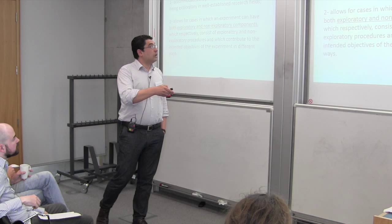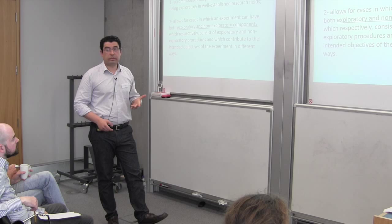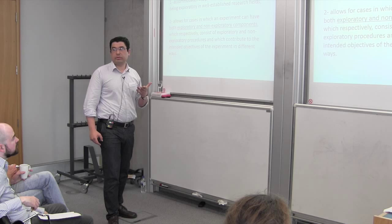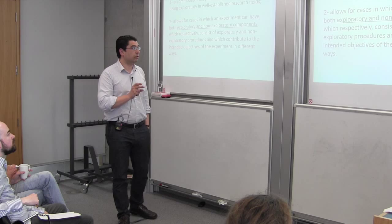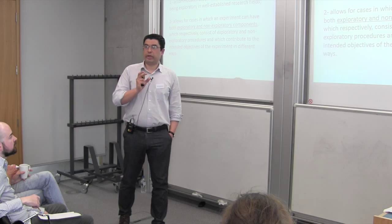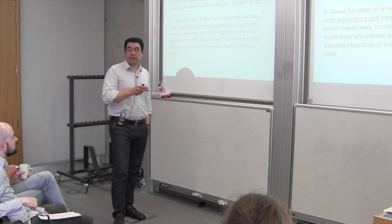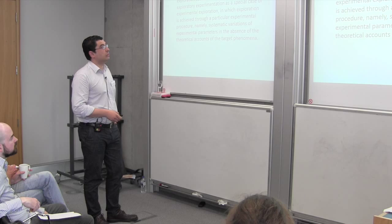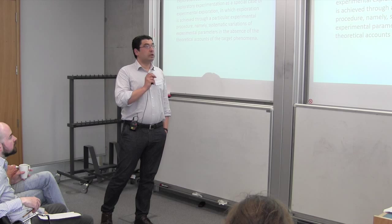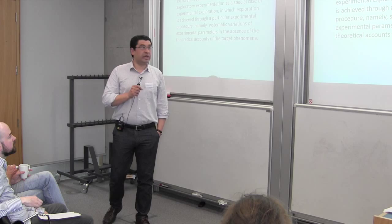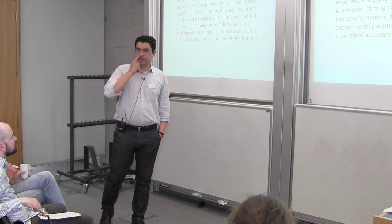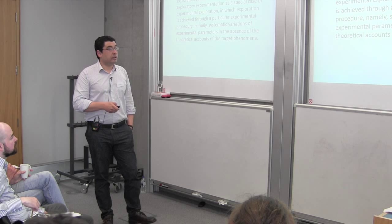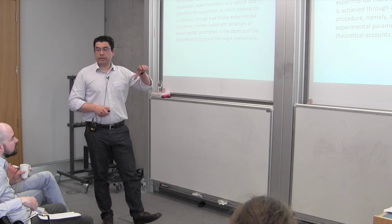Contrary to Steinle's account, my account first accommodates the possibility of experimentation being exploratory in well-established research fields. Second, it allows for cases where an experiment can have both exploratory and non-exploratory components, which might consist of different procedures that contribute to the overall aim in different ways — they can complement each other. The notion of experimental exploration subsumes Steinle's notion of exploratory experimentation as a special case, since in that kind of experimentation we have a particular exploratory procedure: systematic variations of experimental parameters without theoretical accounts.